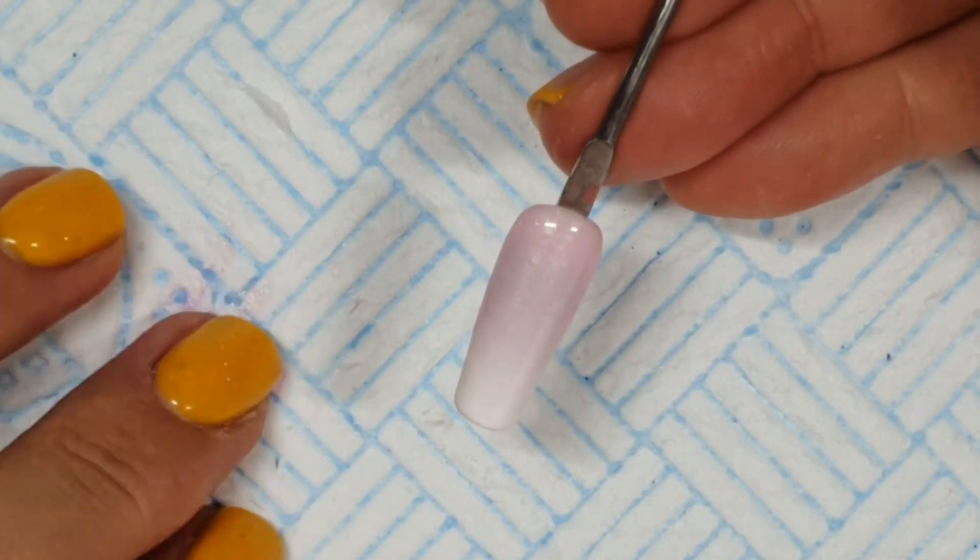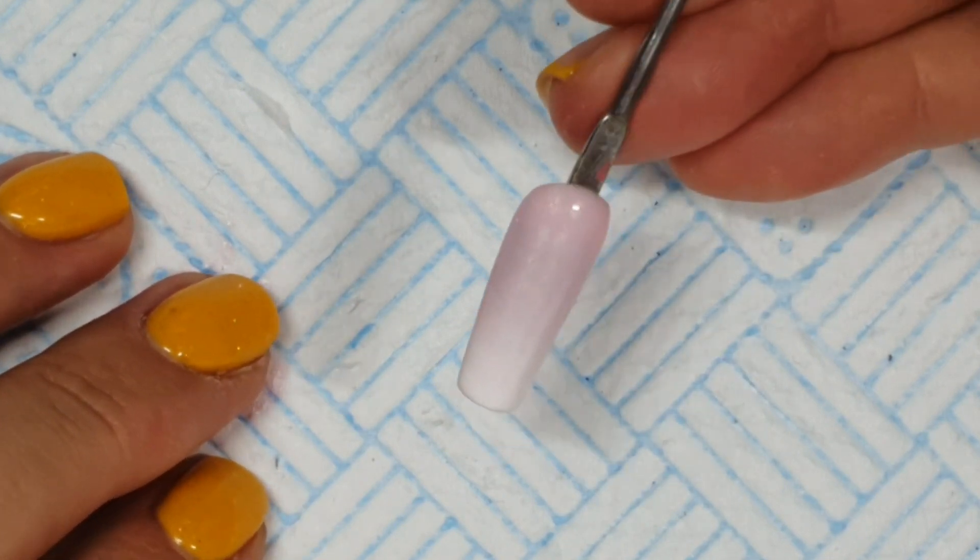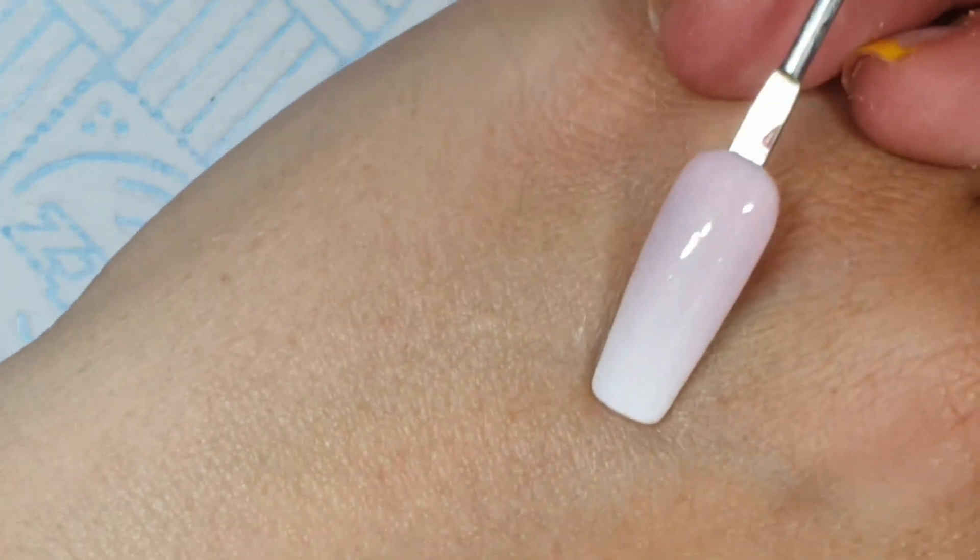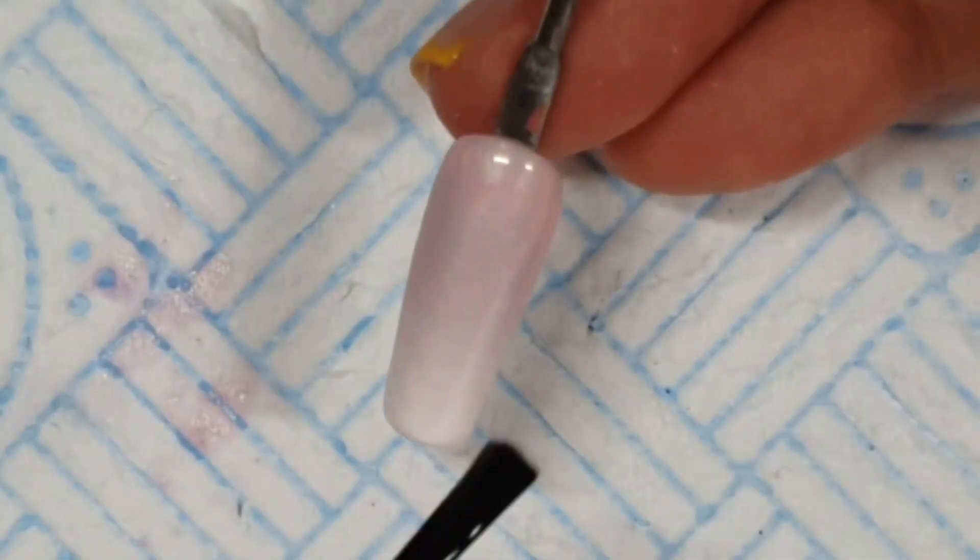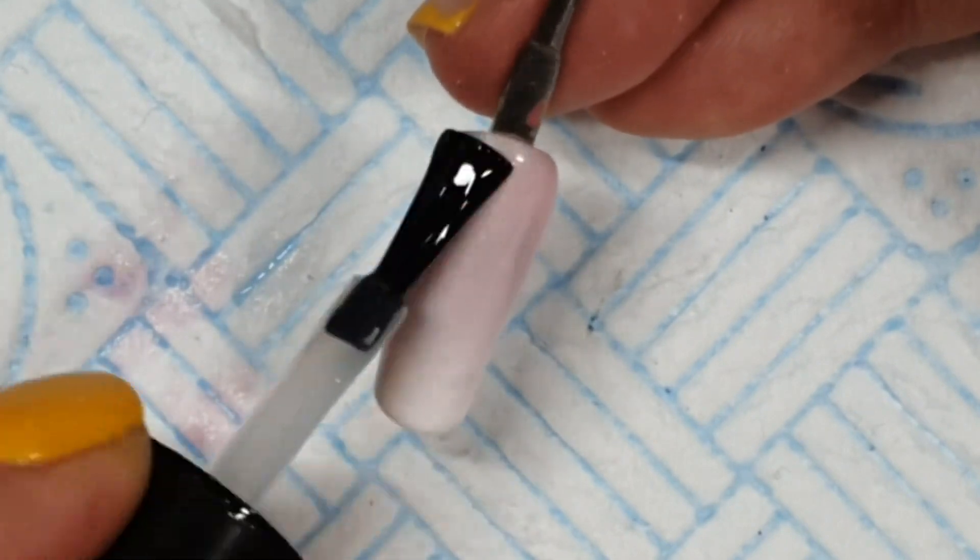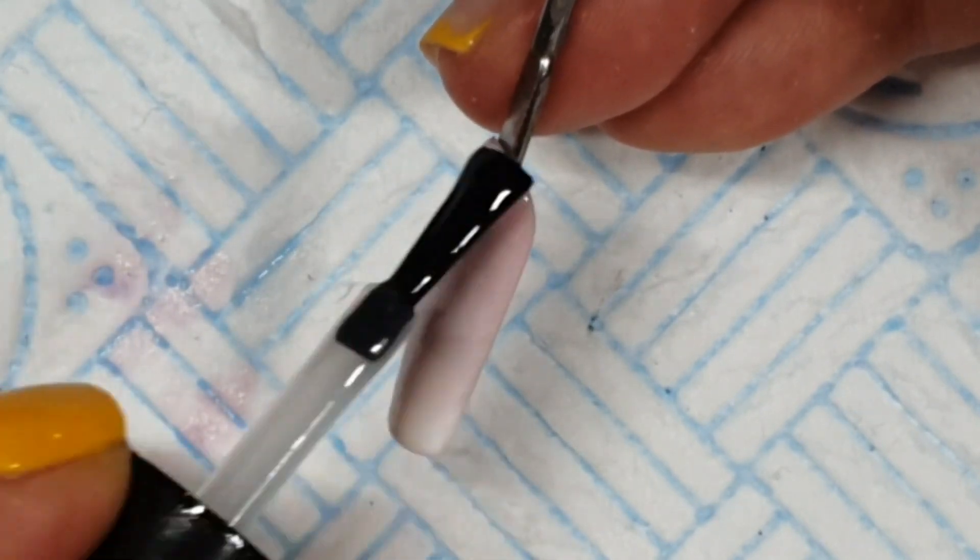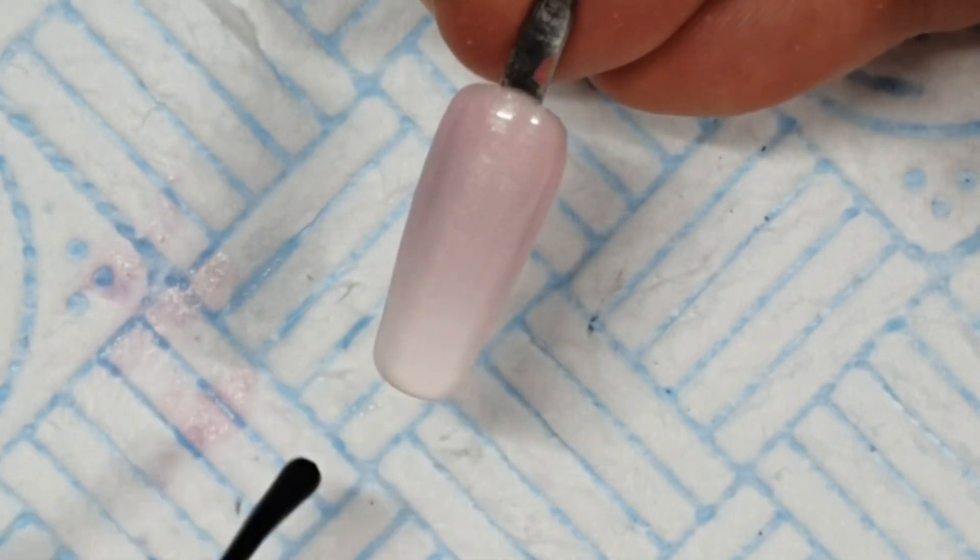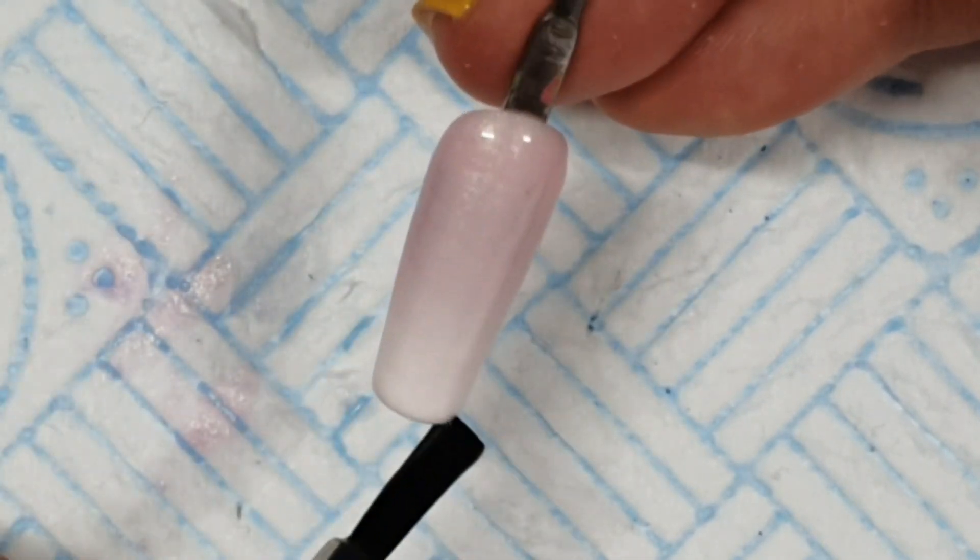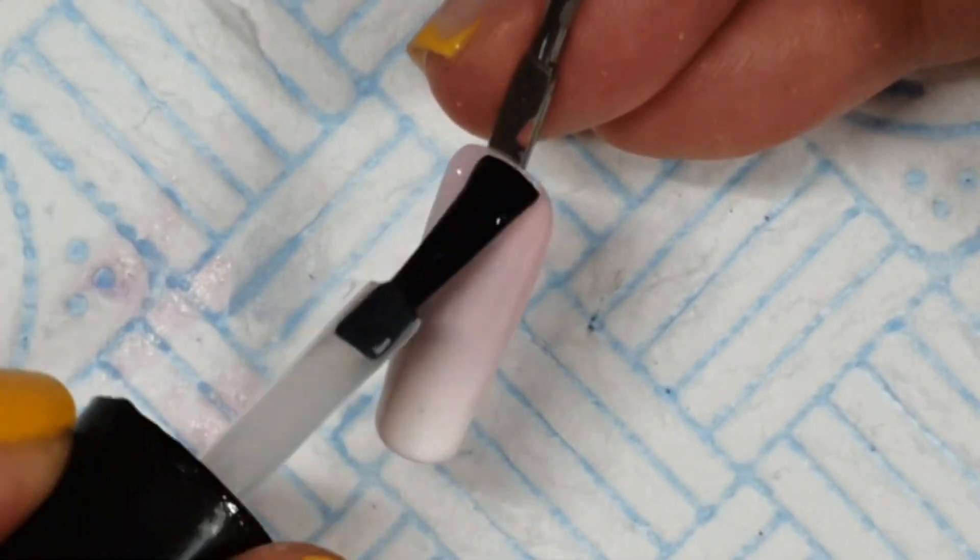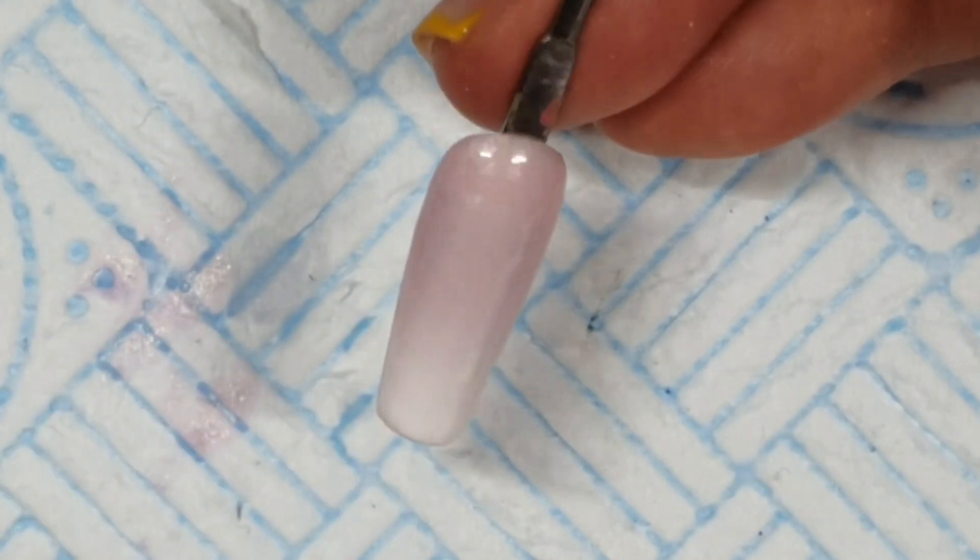Then that will go in the lamp. You can't see the pink as much on camera as you could in real life. So that's been cured and now we are topping with diamond gloss. Of course someone's looking at the window, oh that scared the shit out of me. And then that will have a cure and that will be all she wrote.